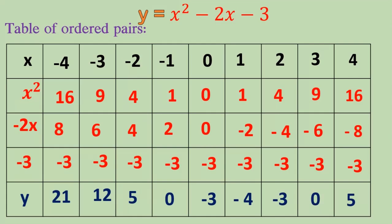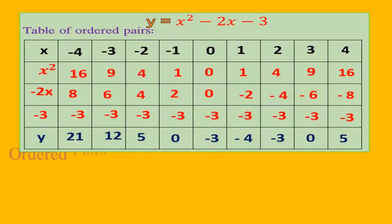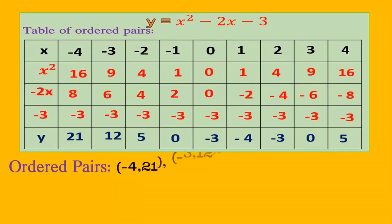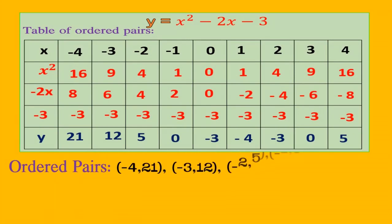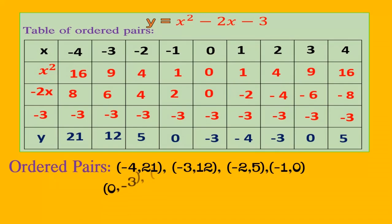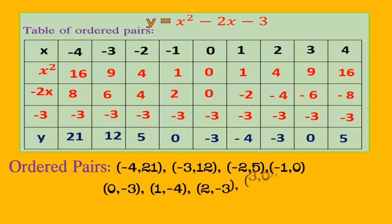After completing the ordered pairs table, write the ordered pairs by taking the x value as abscissa and the y value as ordinate: minus 4 comma 21, minus 3 comma 12, minus 2 comma 5, minus 1 comma 0, 0 comma minus 3, 1 comma minus 4, 2 comma minus 3, 3 comma 0, and 4 comma 5.